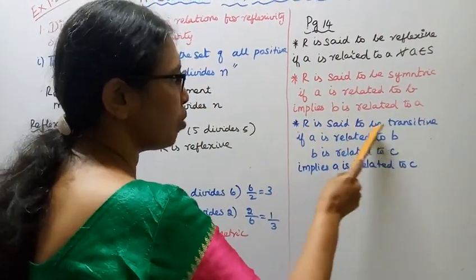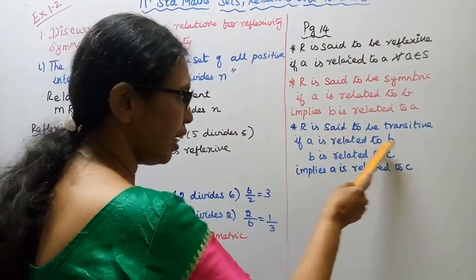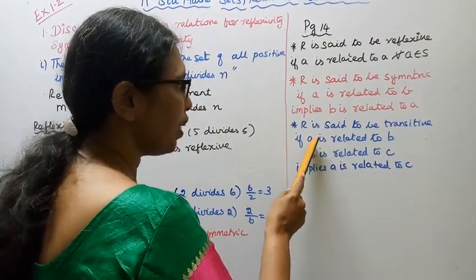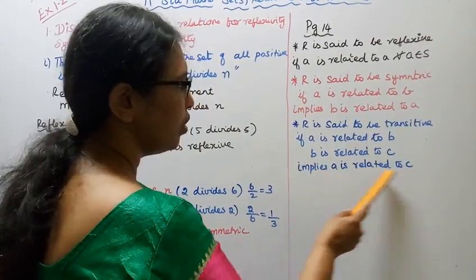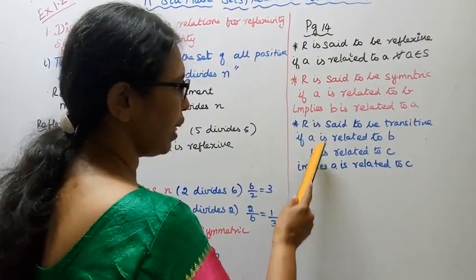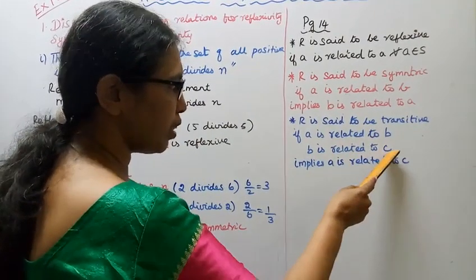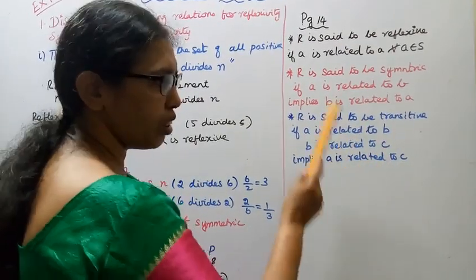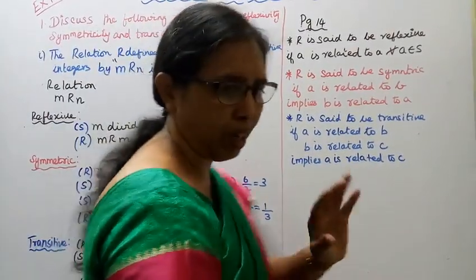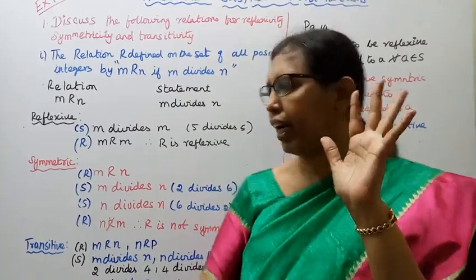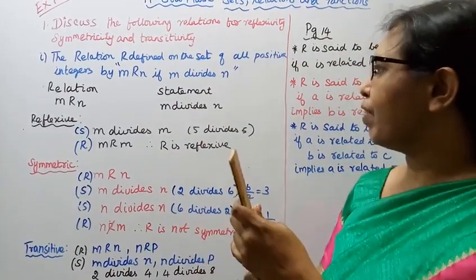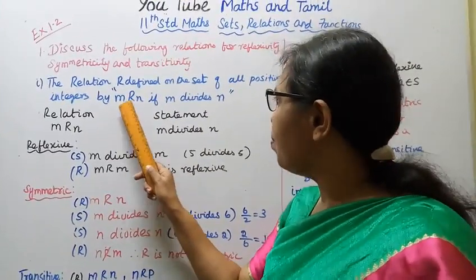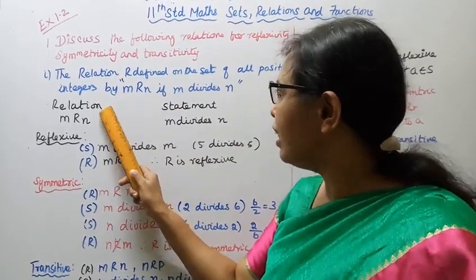R is said to be transitive: if A is related to B, and B is related to C, then A is related to C. That is the transitive relation.